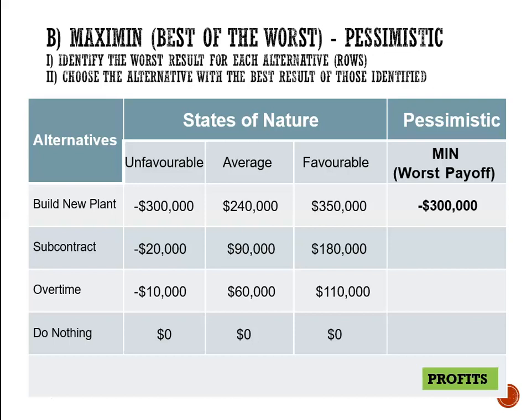For subcontract, we're looking at a loss of 20,000, a profit of 90,000, or a profit of 180,000. The worst outcome is the lowest profit — a loss of 20,000, or negative 20,000. For overtime, we're looking at a loss of 10,000, a profit of 60,000, or a profit of 110,000. The worst outcome is the lowest profit, which is negative 10,000 dollars. For do nothing, it's zero across the board, so the only option is zero.